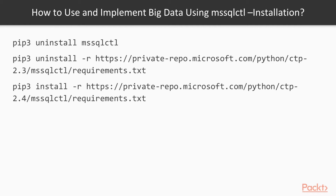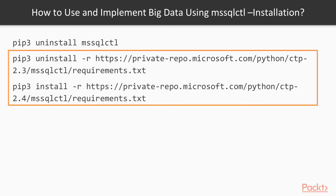The minimum Python version required is 3.5. You must also have PIP, which is used to download and install MS SQL CTL tools. Since it's a Python utility, you need to install Python first, then install the utility using PIP install.